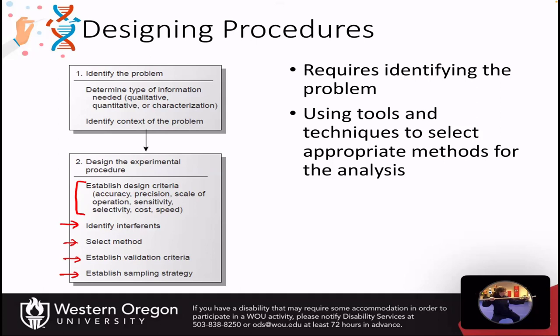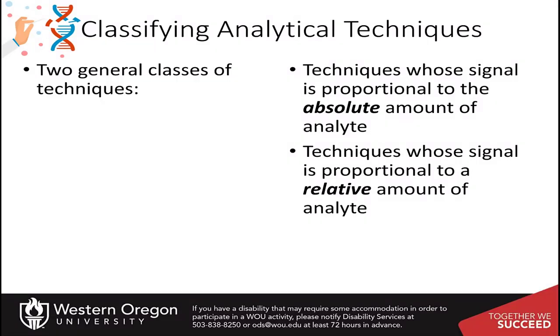You need to select a suitable method and establish validation criteria and a sampling strategy — how do you take samples from wherever they're coming from? For an environmental sample, how do you select sample sets representative of the mixture? For example, if sampling from a lake, where do you choose to make those samplings? We'll talk about sampling strategy later. There are two major types of analytical techniques: those that measure the absolute amount of the analyte, called absolute techniques, and those proportional to the relative amount, called relative techniques.